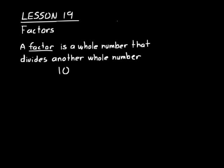There are four factors of 10: 1, 2, 5, and 10. All of those numbers are factors of 10. You can tell they're factors because you can divide them into 10. For example, 1 goes into 10 ten times. 2 goes into 10 five times. 5 goes into 10 two times. And 10 goes into 10 one time.